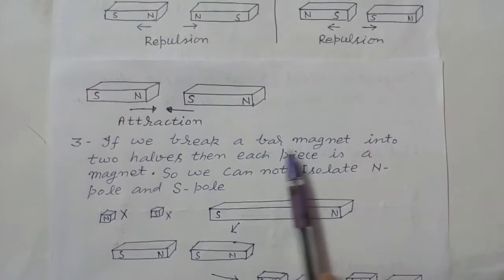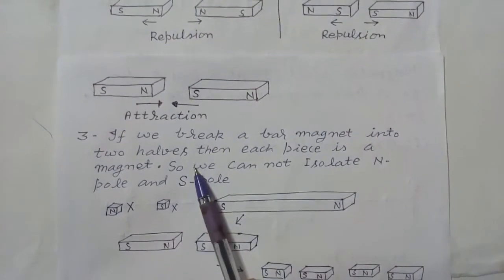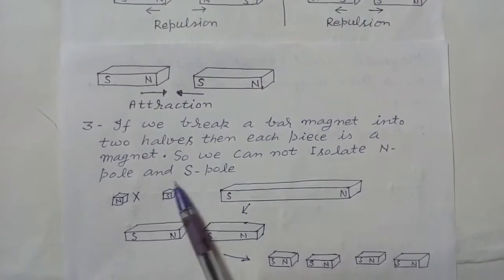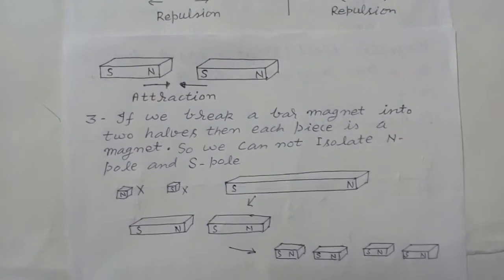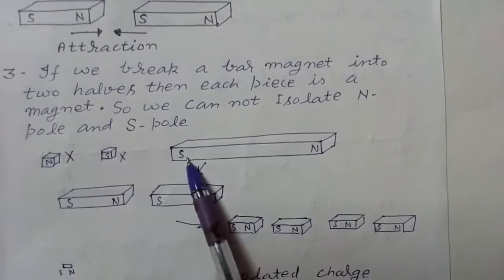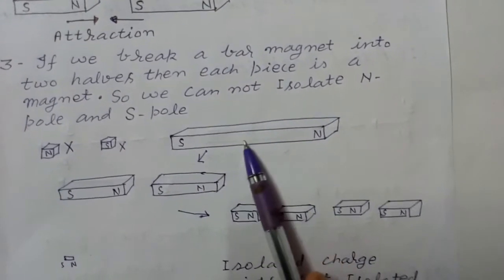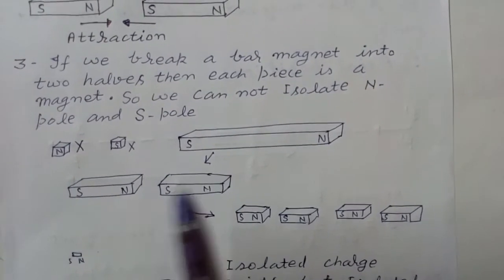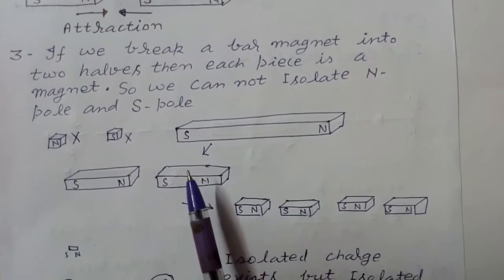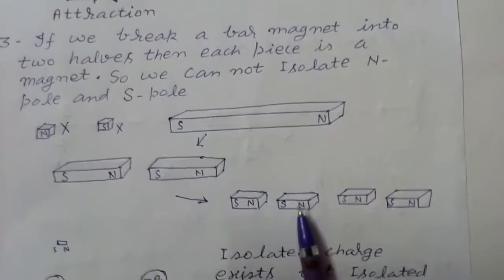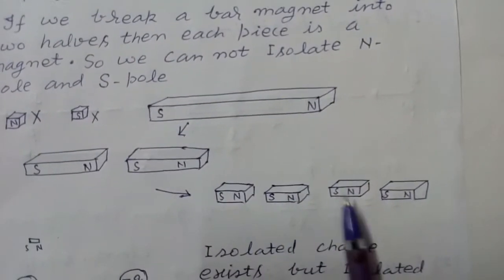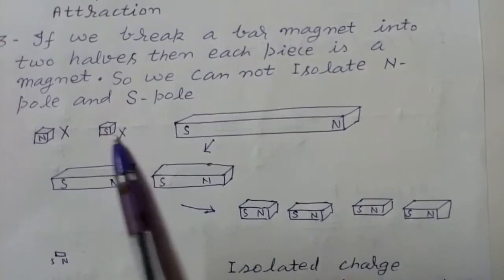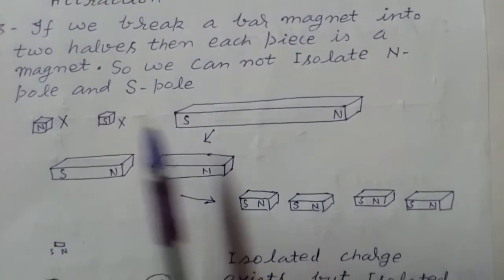Now if we break a bar magnet into two halves, each piece is again a magnet. So we cannot isolate the north pole and south pole. See — this is a bar magnet. If we break it into two equal parts, each piece is a magnet again. If you break it further, each small piece is still a magnet. So we cannot separate the north pole or south pole; this is not possible for a magnet.